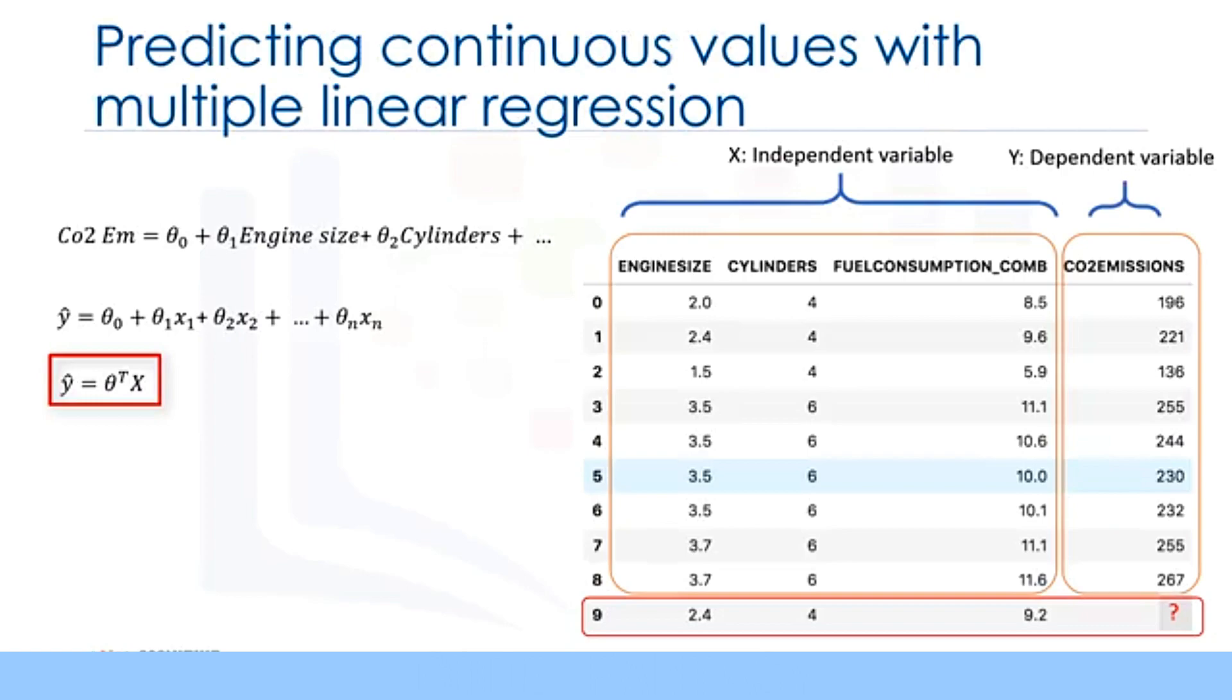Generally, we can show the equation for a multi-dimensional space as theta transposed x, where theta is an n by 1 vector of unknown parameters in a multi-dimensional space, and x is the vector of the featured sets. As theta is a vector of coefficients and is supposed to be multiplied by x, conventionally it is shown as transpose theta. Theta is also called the parameters or weight vector of the regression equation, and x is the feature set which represents a car. For example, x1 for engine size or x2 for cylinders.